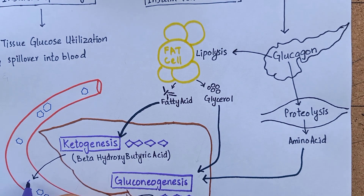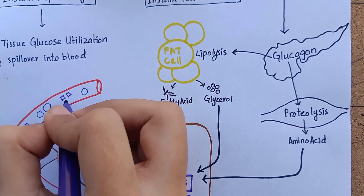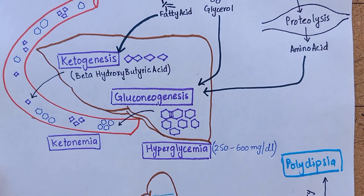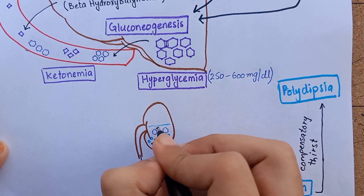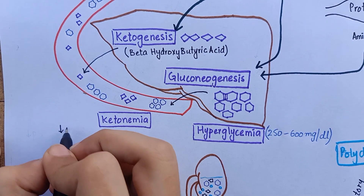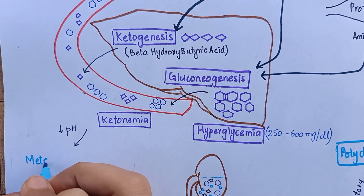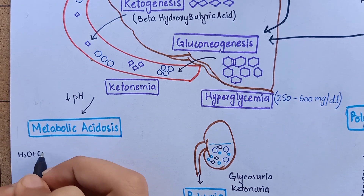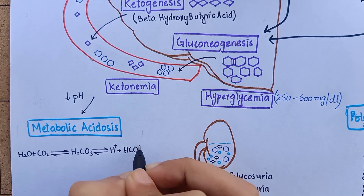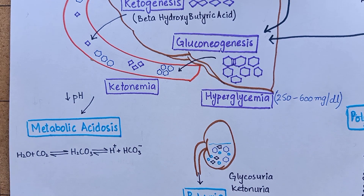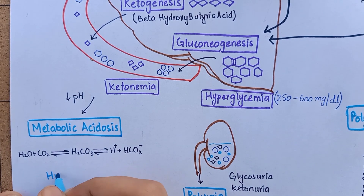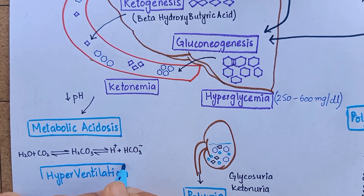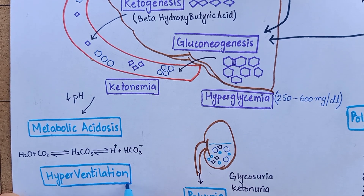The rate at which ketone bodies are formed usually exceeds the rate at which they are utilized by peripheral tissues, leading to their accumulation in blood — ketonemia — and also ketonuria. The ketone bodies have a low pH and therefore turn the blood more acidic, causing metabolic acidosis. The body initially neutralizes this change with the bicarbonate buffering system, but this system is quickly overwhelmed and another compensatory mechanism is required. One such mechanism is hyperventilation to lower blood carbon dioxide levels — a form of compensatory respiratory alkalosis.